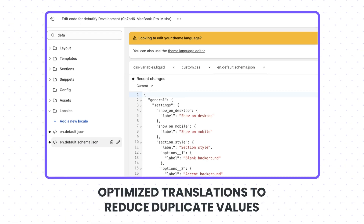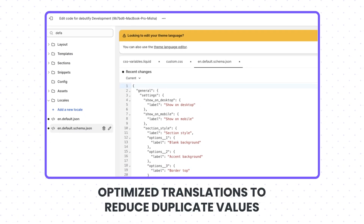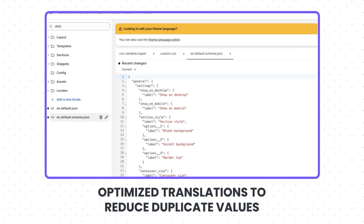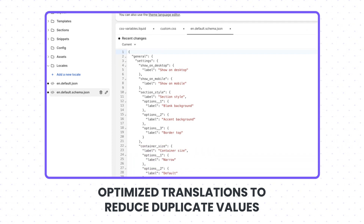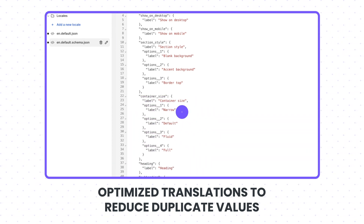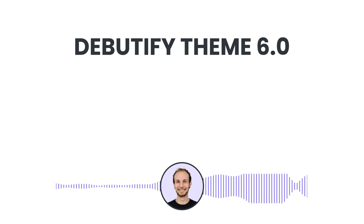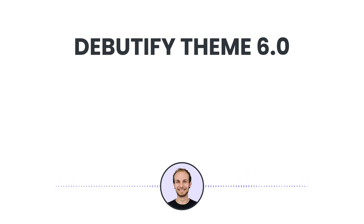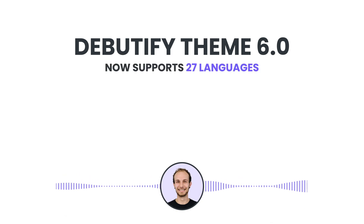We've also optimized translations to reduce duplicate values. This means fewer strings to translate and more consistency across your store. Plus, Debutify Theme 6.0 now supports 27 languages.